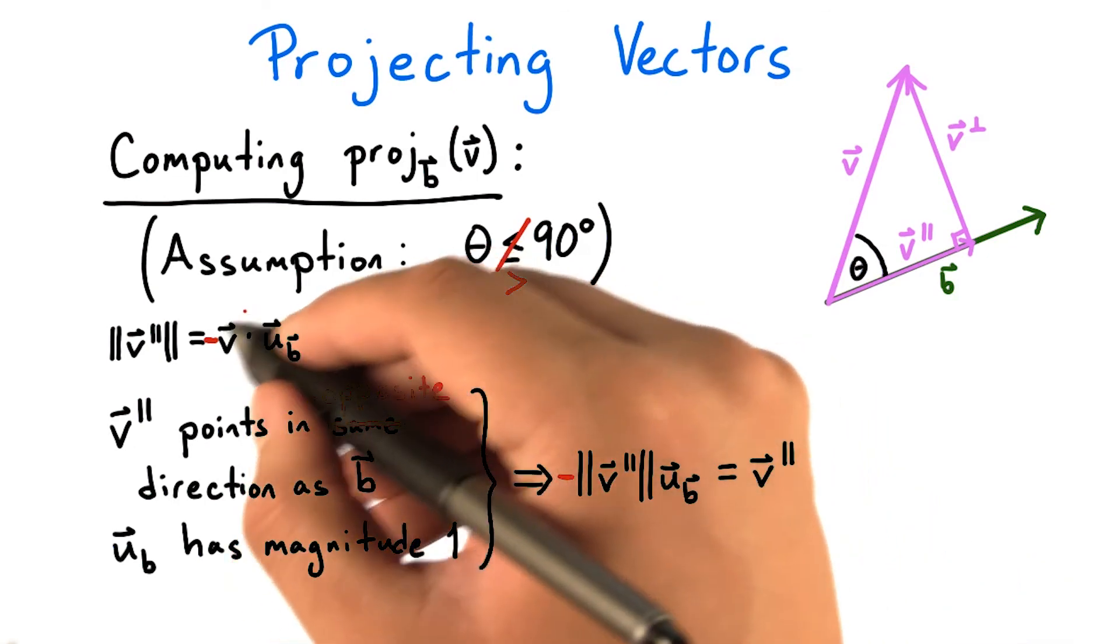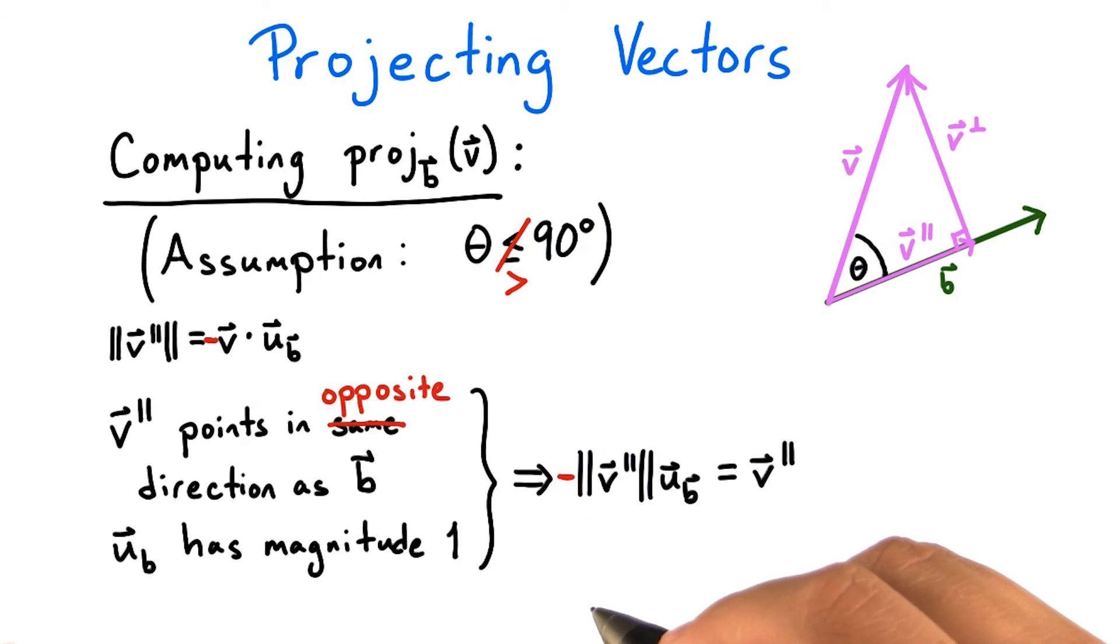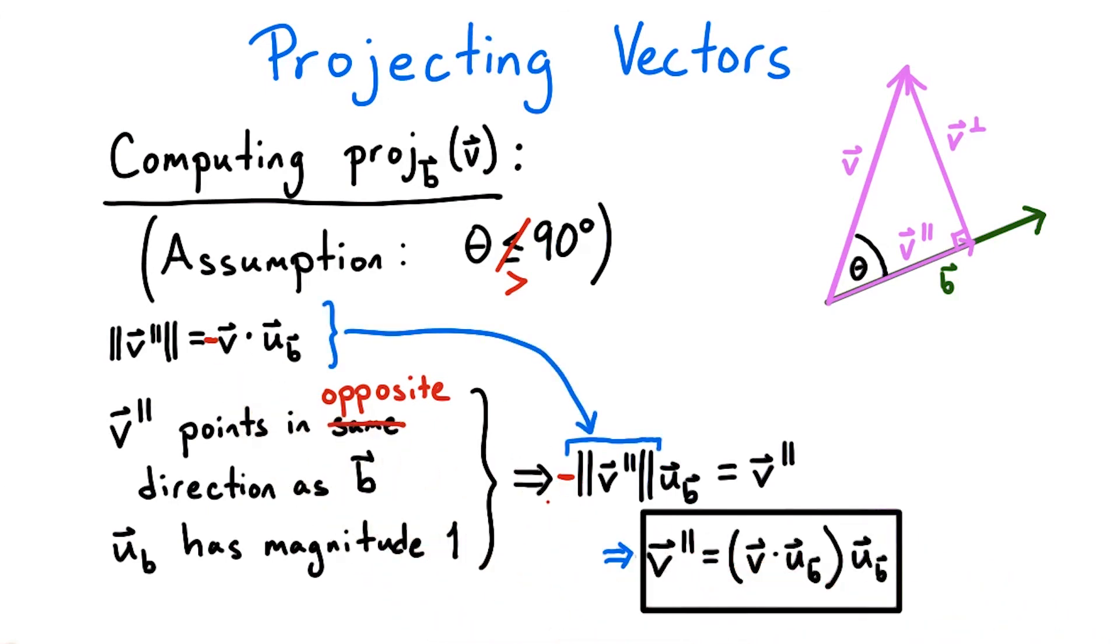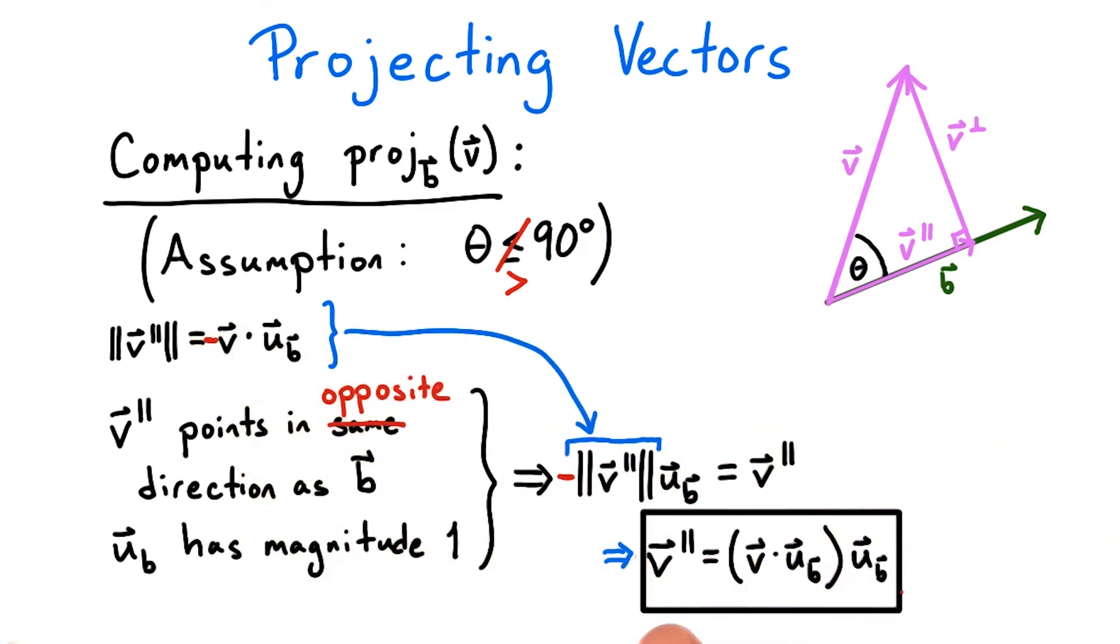So regardless of the assumptions that we make on this angle, we'll always get the same formula for v parallel, in other words, the projection of v onto b.